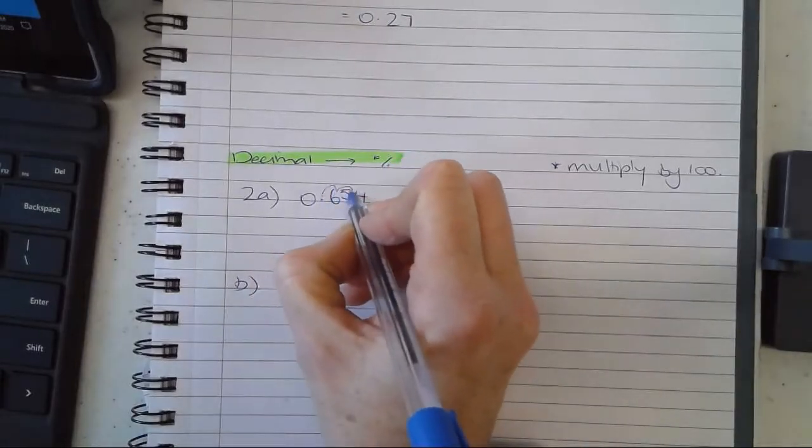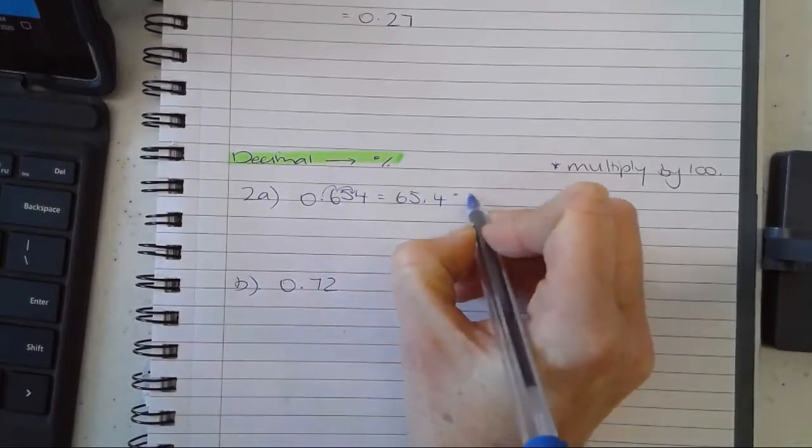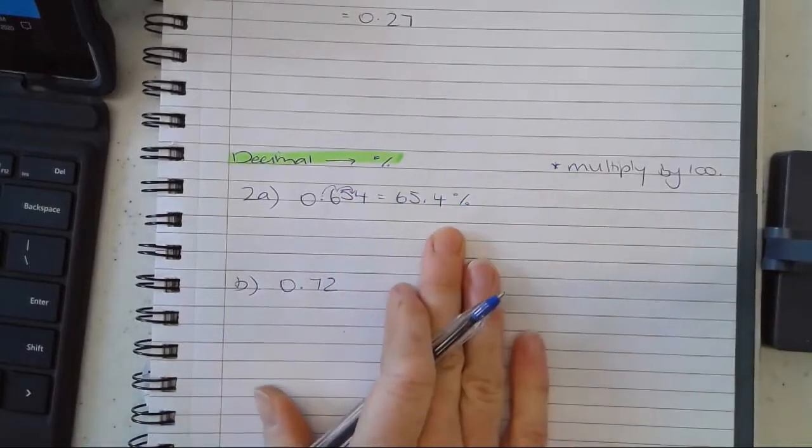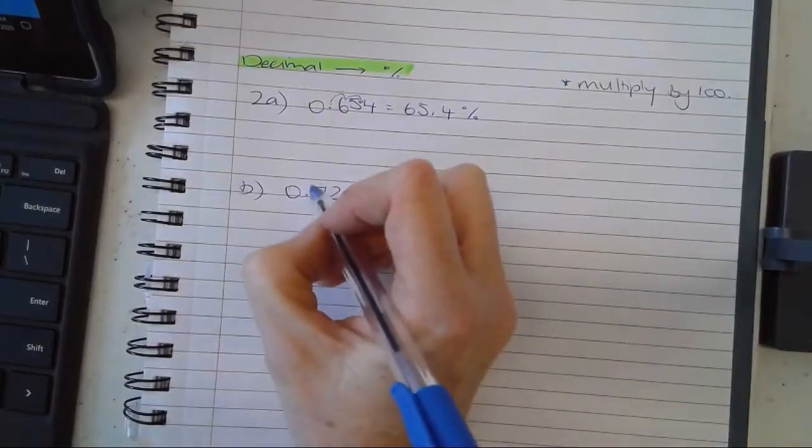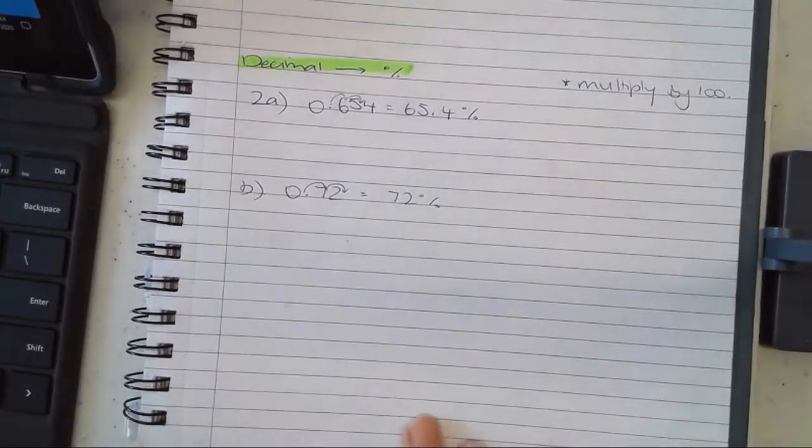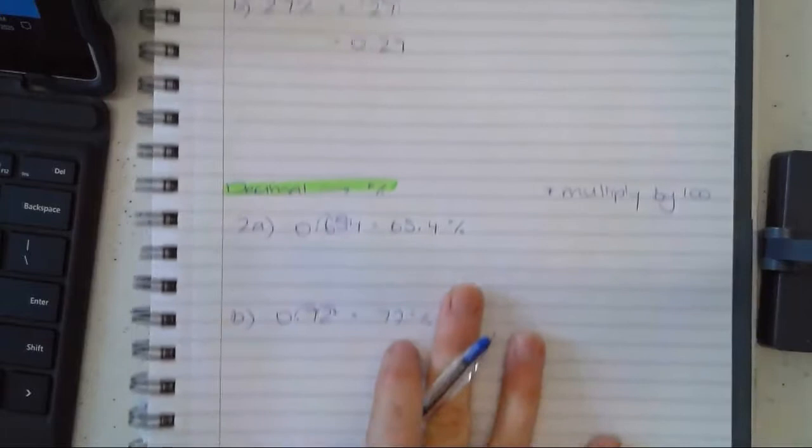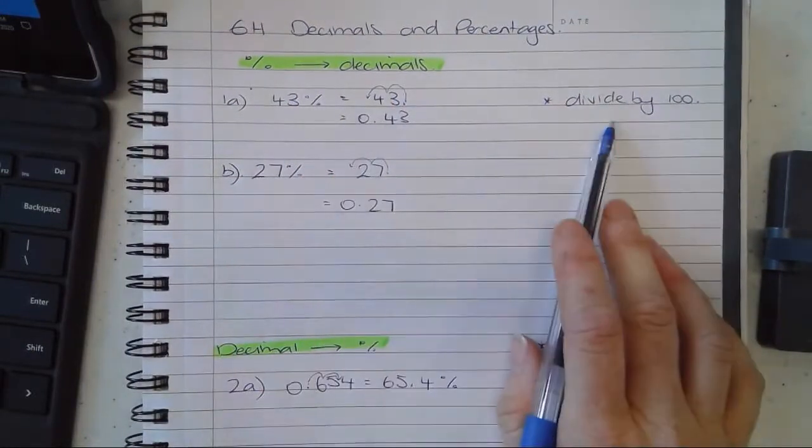So I'm going 1, 2: 65.4%. Don't forget the percentage in your answer. And then here I've got times by 100: 72%. Very straightforward. Just to recap: going from a percentage to a decimal, I divide by 100, moving my decimal point to the left 1, 2.